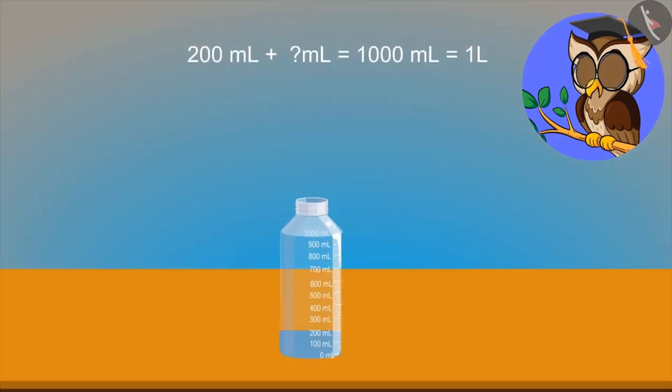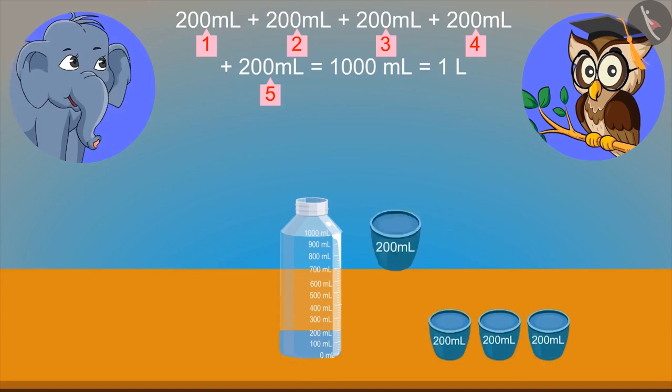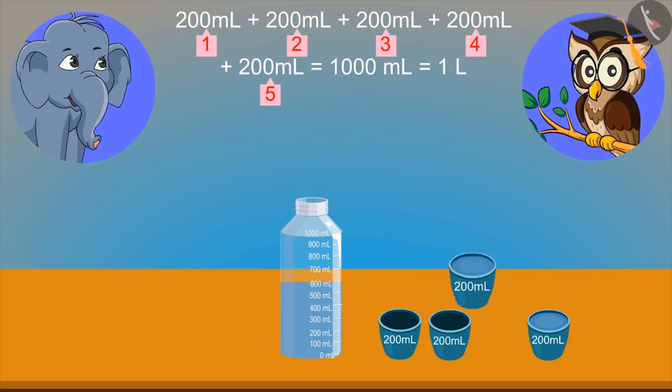Now, answer one more question of mine. This bottle contains 200 ml of water. How many times 200 ml bottles should be added to give 1000 ml of water? I know, that adding 200 ml for 5 times gives 1000 ml or 1 liter.